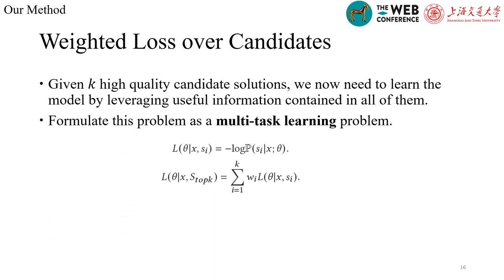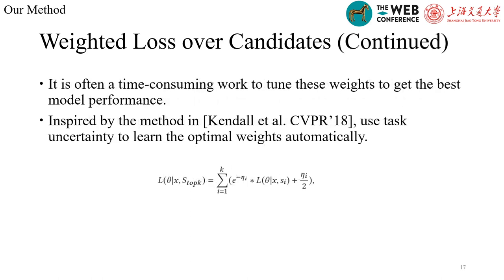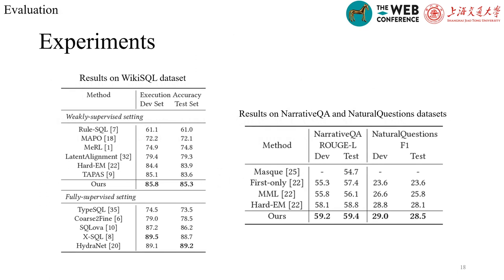By calculating a weighted average of all these scores, we can sort the candidate solutions. The solutions ranked as top-K are high-quality solutions. Given K high-quality candidate solutions, we formulate learning from them as a multi-task learning problem. Since it is time-consuming to tune weights in multi-task learning manually, we use task uncertainty to learn the optimal weights automatically, inspired by a method from CVPR 2018. The formula is applied accordingly. That's all of our method.